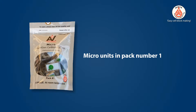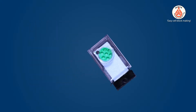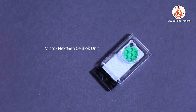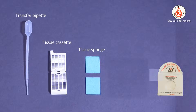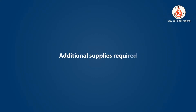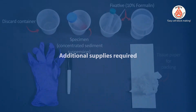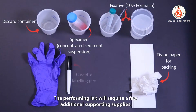Micro units are provided in pack number 1. Ancillary supplies are provided in pack number 2. The performing lab will require a few additional supporting supplies.